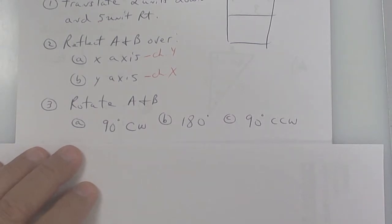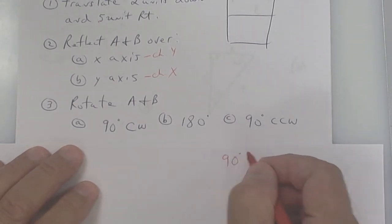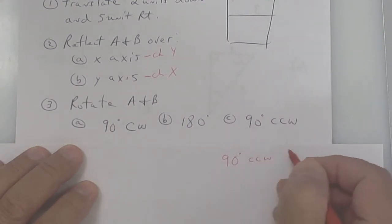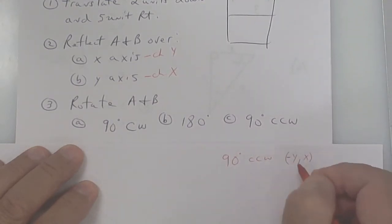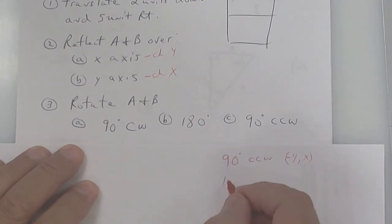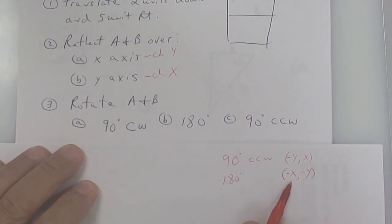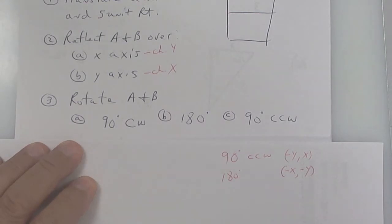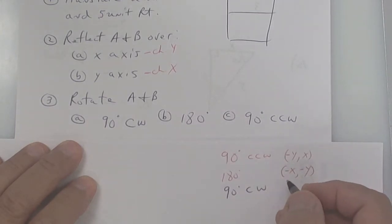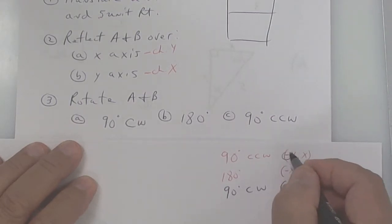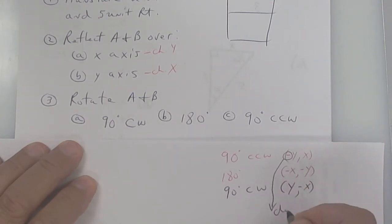For rotations we need to look at the rules. 90 degrees counterclockwise is negative y and x. 180 degrees in either direction is negative x and negative y — that means change both x and y. Finally, 90 degrees clockwise: switch them but change the x. Remember, 'negative' here doesn't mean it's literally negative — it means change it, so if it is negative you put a positive.